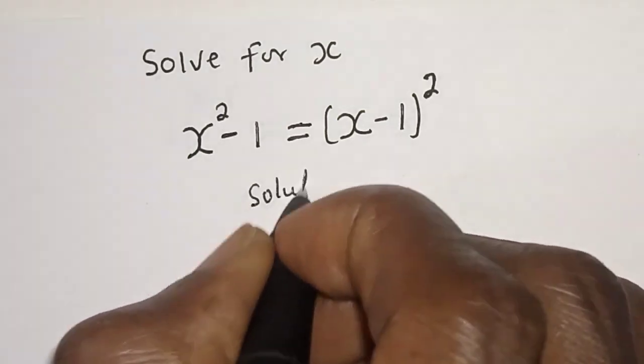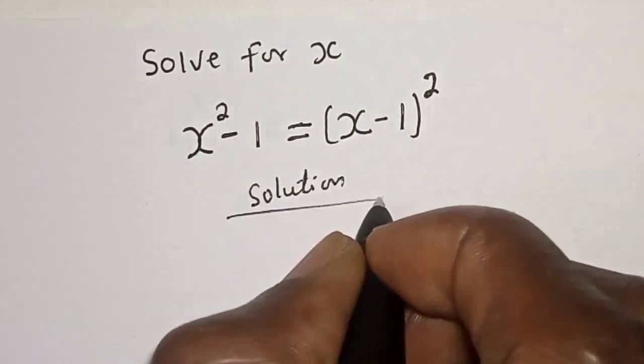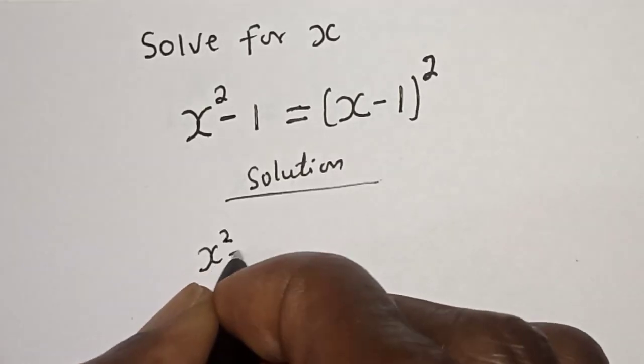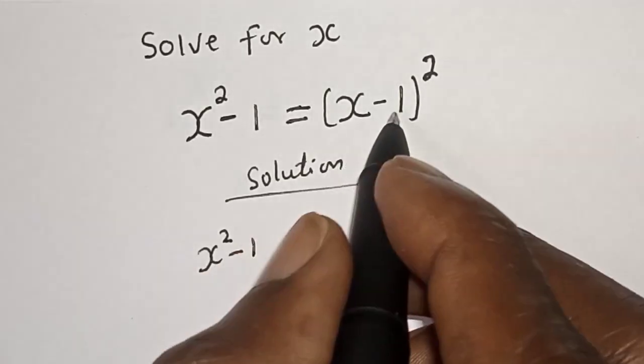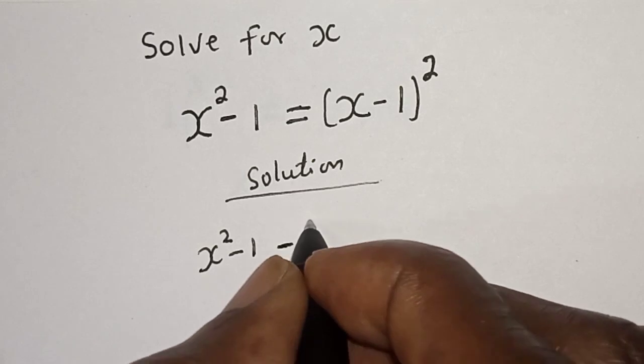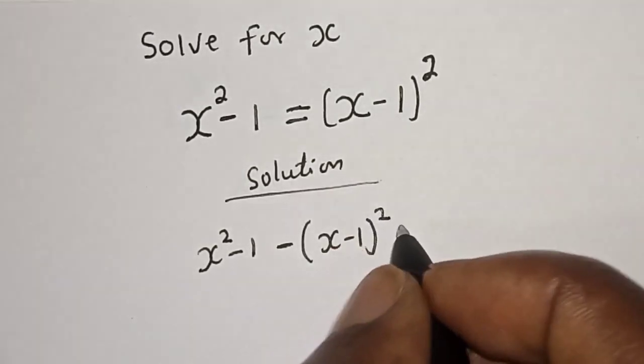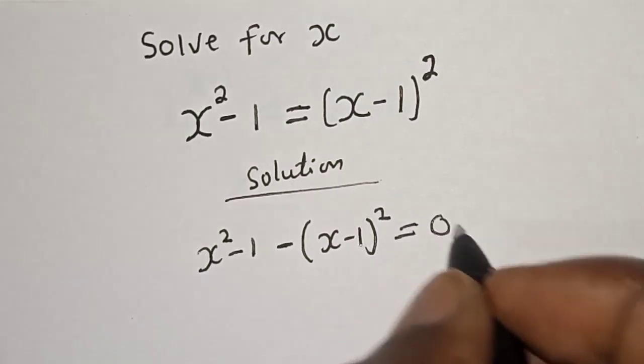Solution. Then we have x squared minus 1. Then let's bring this to this side, and minus (x minus 1) squared is equal to 0.